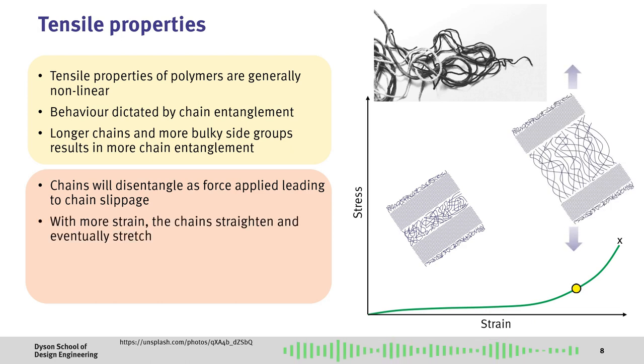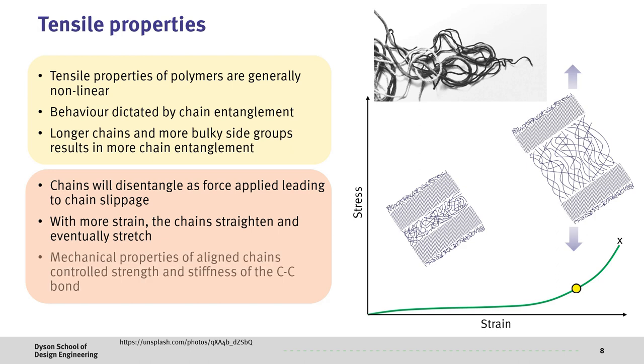With even more strain, the chains start to straighten and eventually stretch. At this point, the polymer stiffness increases as the mechanical properties become more defined by the stiff carbon-carbon bonds rather than the weaker van der Waals forces involved when chains slip past each other.